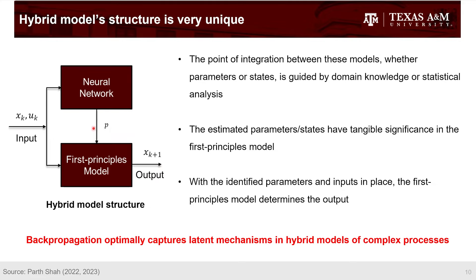When you train this hybrid model, you cannot train the neural network using input-parameter pairs because parameters are not measurable. Instead, you start with some initial condition for the hyperparameters of the neural network and use the input to generate initially very poor guesses for the parameters, which are then fed into the first-principle model. Initially the predictions will be really bad, but based on those we do backpropagation to further adjust the hyperparameters within the neural network. The only way to train this hybrid model is by running the first-principle model every time you train the neural network, so it becomes computationally very expensive.